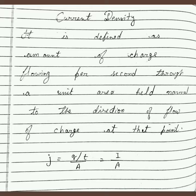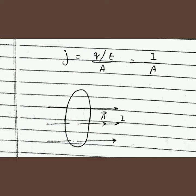Current density symbol is J, and the formula of current density is J = Q/T divided by area, where Q/T is current. So J equals I upon A. This is the simple formula of current density — charge per unit time per unit area. As you can see, the cross-sectional area of the wire in which current and area vector are both in the same direction, so the formula of J is equal to I upon A.